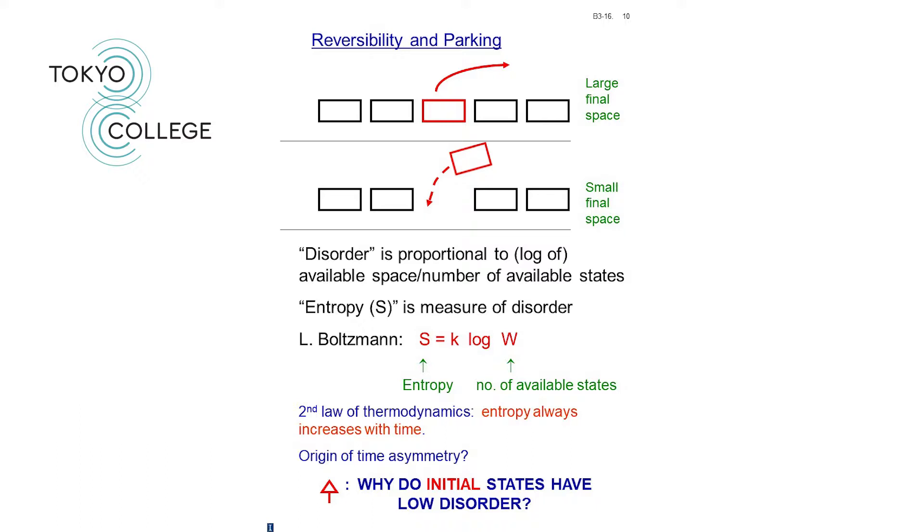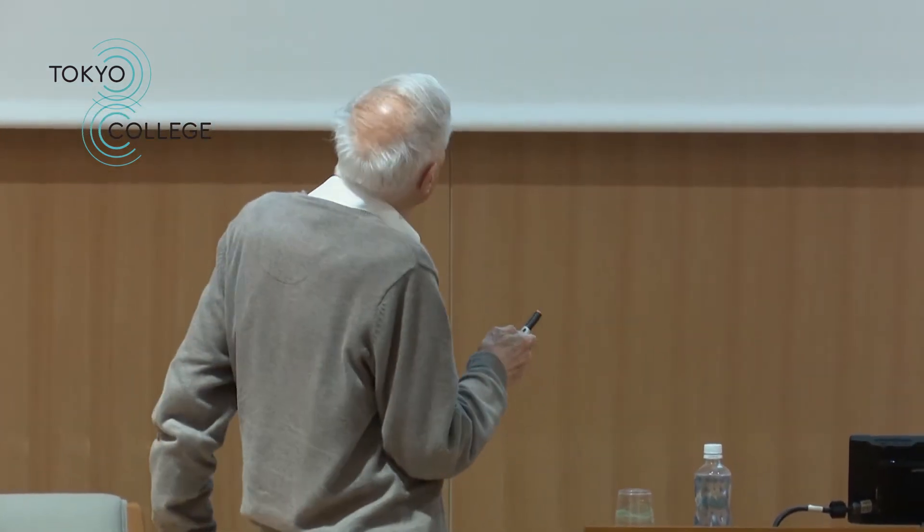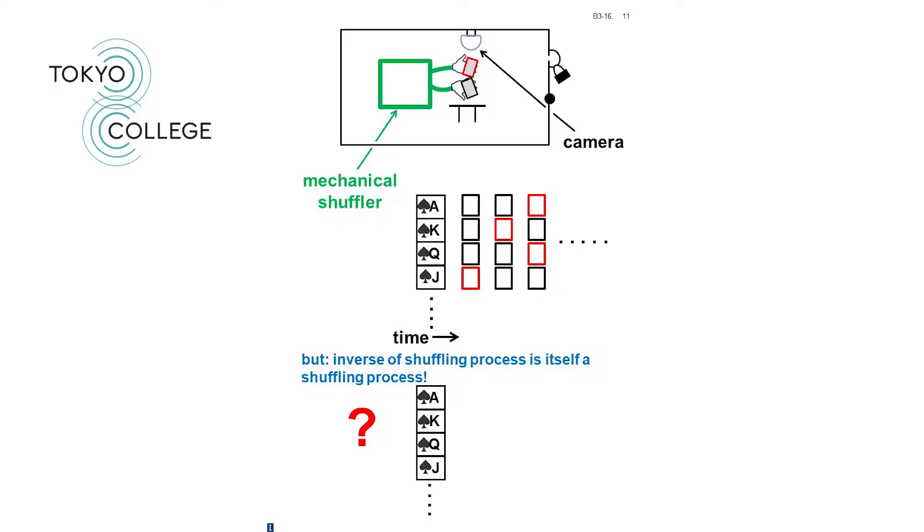But there's a problem. In this argument, you're always assuming that it's the initial states and not the final states which have low disorder. So let's just say a little about that question. Let's imagine the thought experiment, which involves the shuffling of a deck of cards. So I'm going to imagine that we have a closed room with a lock on the door here. And inside, we have a mechanical shuffler, a machine, which will shuffle the cards. And we have a camera, which will, first of all, make sure that no one breaks into the room. And secondly, it will take a picture of the cards at any particular point in the shuffling process.